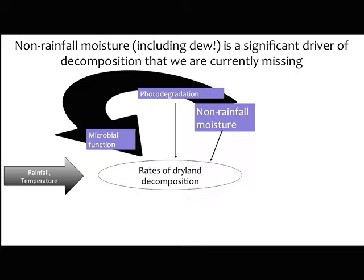Our main finding was that non-rainfall moisture — including dew, which is a lot more ubiquitous on earth than fog — is going to be a significant driver of decomposition that we're currently missing in models.